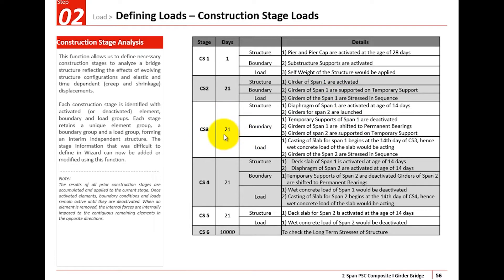In CS3, where the duration is 21 days, the diaphragm of span 1 would be activated at the age of 14 days, and the girders for span 2 would be launched. The previous span 1 girders on the temporary supports would be deactivated — meaning the temporary supports would be deactivated and switched to the permanent bearings. The girders of span 2 would be on the temporary supports. In the load part, the casting of the slab of span 1 would begin at age 14 days of CS3, so the wet concrete load of the slab would be acting on the girders of span 1.